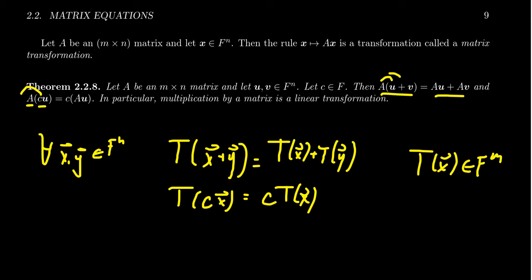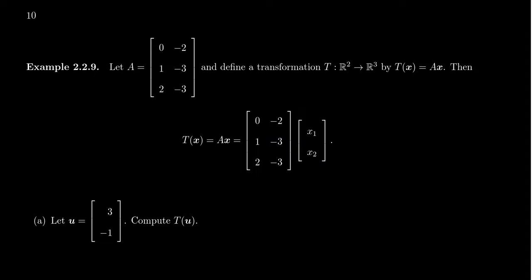This tells us that matrix multiplication induces a linear transformation — every matrix transformation is actually a linear transformation. What will be impressive later in this series is that we will see every linear transformation is actually just matrix multiplication with the right perspective, but that's getting a little ahead of ourselves.